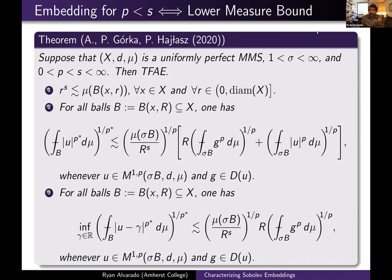A few remarks: the sigma strictly bigger than one is there because we're in such a general environment — if we knew more about the underlying space, sigma could be taken to be one. Similarly, there are multiplicative factors of the measure of sigma-B over R to the power S that could go away with additional information. What's important in conditions two and three is that they encode information about U in the L^{p*} norm in terms of U and its gradient in the L^p norm. Hajłasz in 2003 had proved that one implies three — the Sobolev-Poincaré inequality holds on all balls provided you assume the lower measure bound.